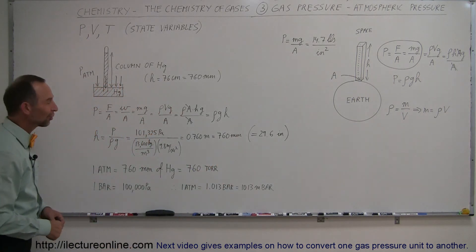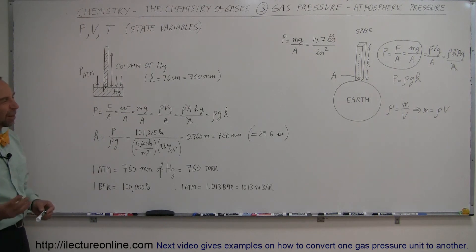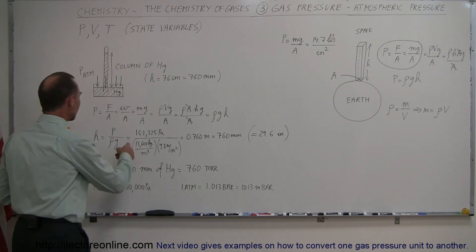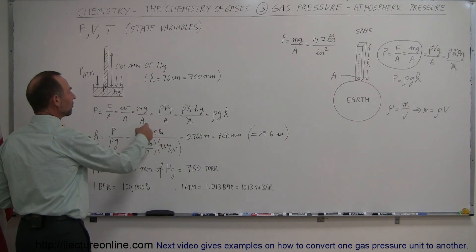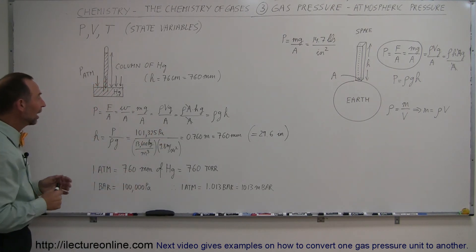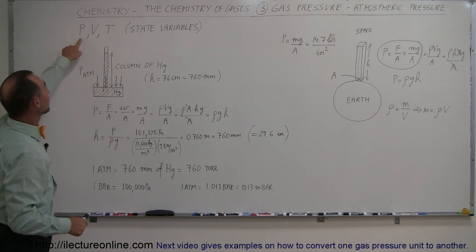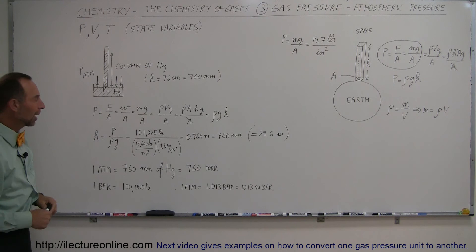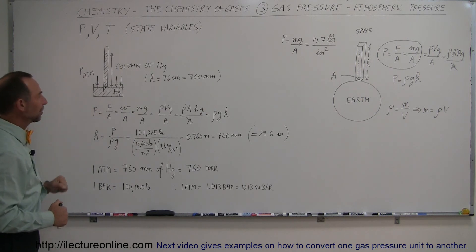But anyway, those are all the different units. In chemistry, we probably will use this unit the most, which is 101,325 pascals, or 101.3 kilopascals, and so we'll use that as a unit in here for pressure, as one of the state variables that we'll use later on in our PV equals NRT equation. And of course, sometimes we also talk about pressure in terms of it being a single atmosphere.